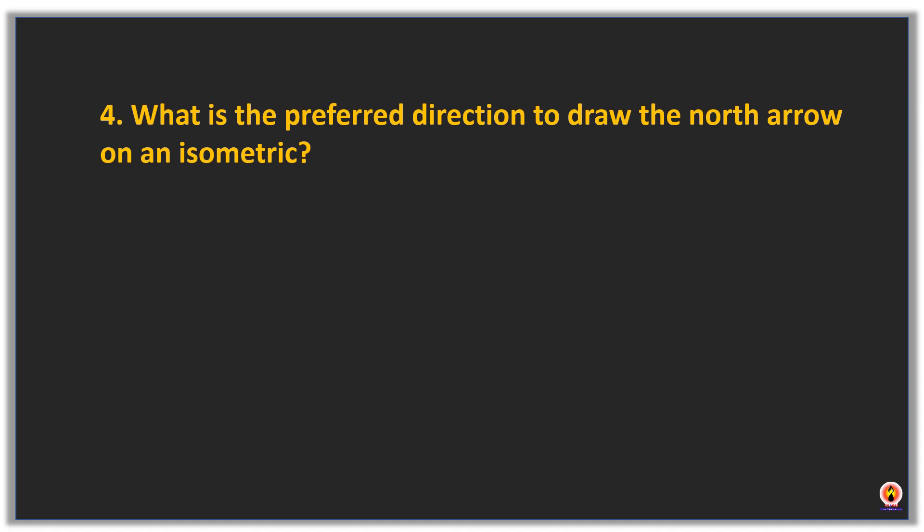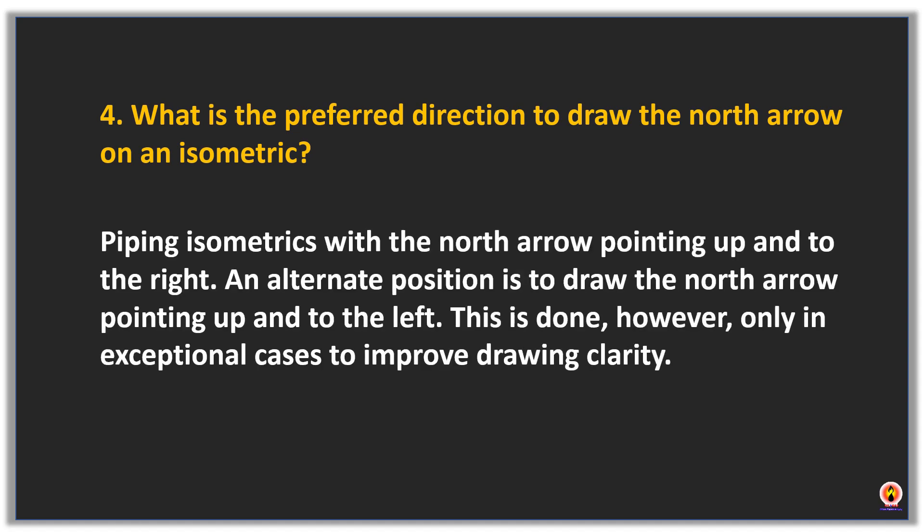The preferred direction to draw the north arrow on a piping isometric is pointing up and to the right. An alternate position is to draw the north arrow pointing up and to the left, but this is done only in exceptional cases to improve drawing clarity.